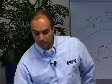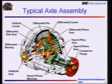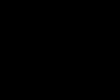Here's a picture showing everything within a typical axle assembly, and we're going to talk about all of these things in the next hour or so. We're going to start right up here with the companion flange, where the prop shaft bolts on.